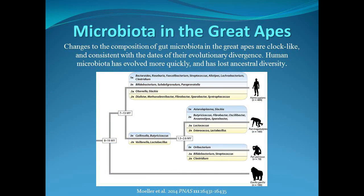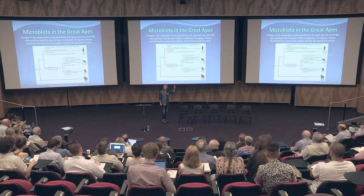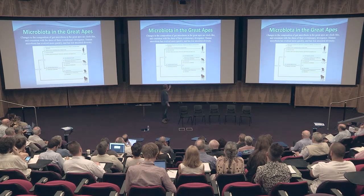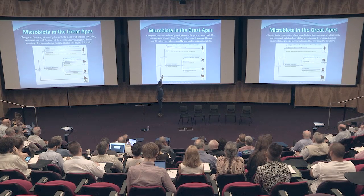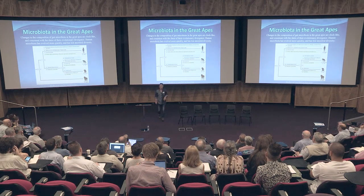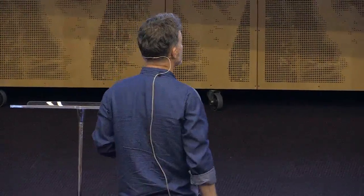All of those approaches tell basically the same conclusion. Looking at the microbiota in the great apes, this is a family tree not of the great apes themselves but of the microbiota within them. The distinction between humans and chimps goes back 7 to 13 million years - some 2 to 8 million years earlier than we know the human and chimpanzee DNA diverges. In other words, the microbiota of humans has evolved much more rapidly than that of the great apes.